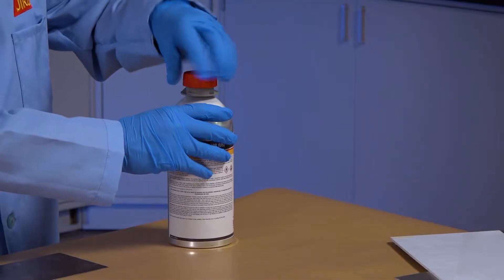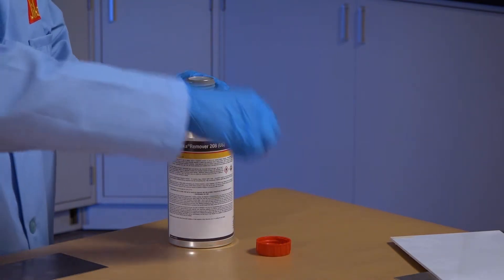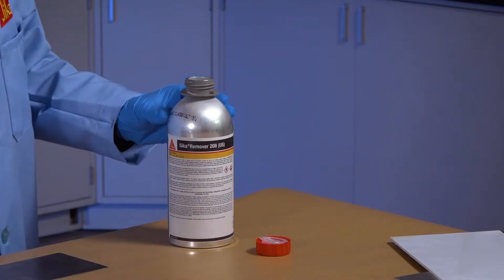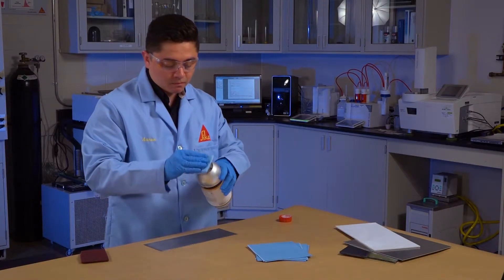Non-porous substrates such as some metals that are heavily soiled can be cleaned with Sika cleaning agents like Sika Remover 208 or other suitable cleaning agents. Allow the cleaning agent to dry completely before proceeding to the next step.